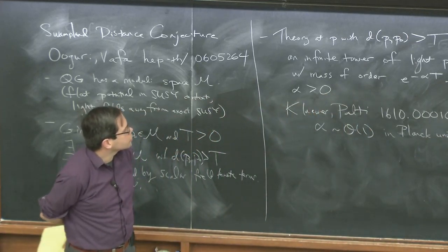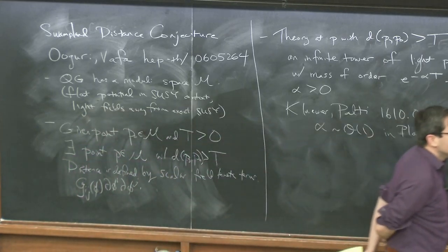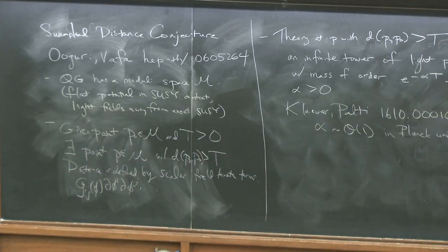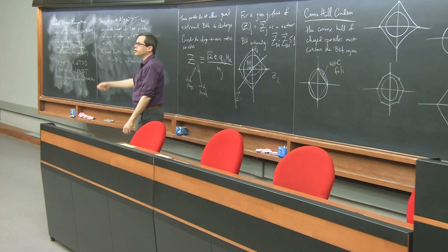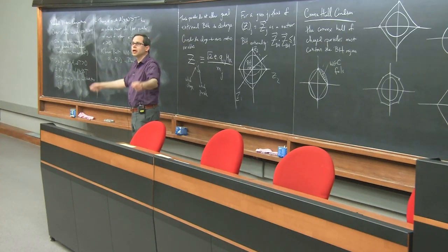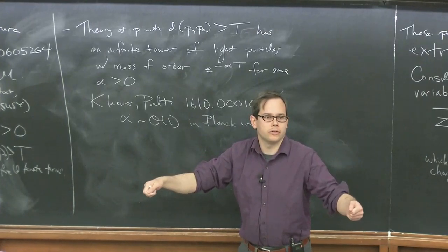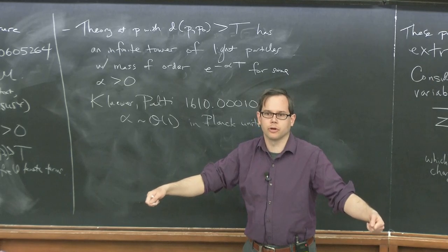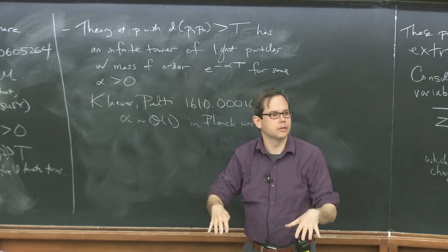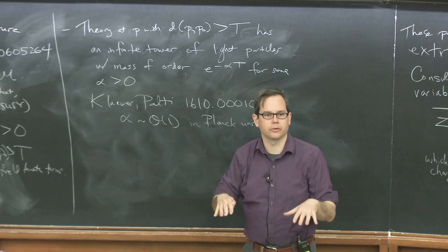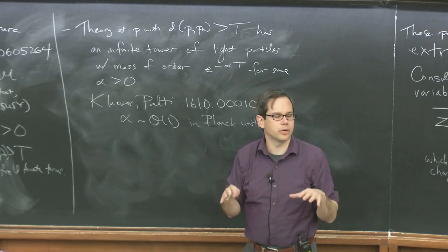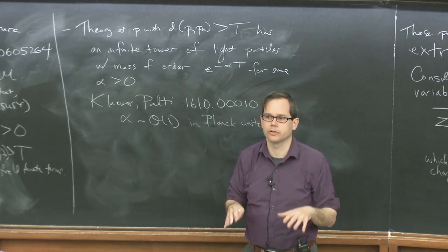What does this mean? It means that in quantum gravity, first there are these big moduli spaces — scalar fields that let you vary the parameters of the theory by arbitrarily large amounts — but whenever you try to vary them too much, you find that your effective field theory starts to break down because lots of particles are starting to become light. If you don't incorporate those particles in your theory, you don't have a good understanding of the physics anymore.